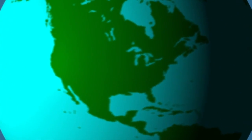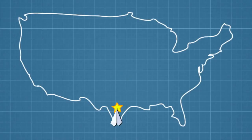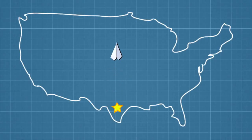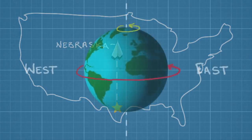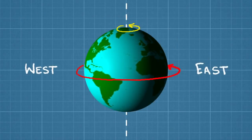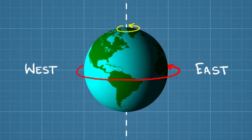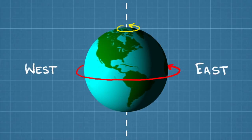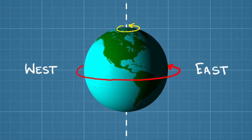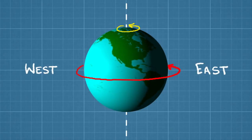Imagine you were standing in Texas and had a magic paper airplane that could travel hundreds of miles. If you threw your airplane directly northward, you might think it would land straight north, maybe somewhere in Nebraska. But Texas is actually spinning around Earth's axis faster than Nebraska is, because it's closer to the equator. That means the paper airplane is spinning faster as well, and when you throw it, that spinning momentum is conserved.